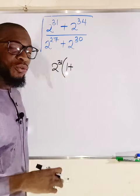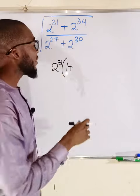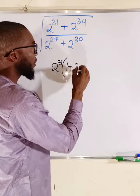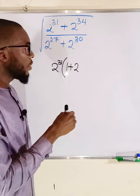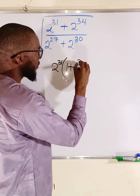If you take this, you divide by this, you know you are just going to apply one of the laws of indices. You take a base, then you subtract the exponent 34 minus 31, which is equal to 3. This is 3.